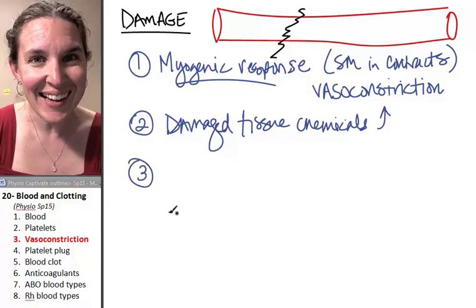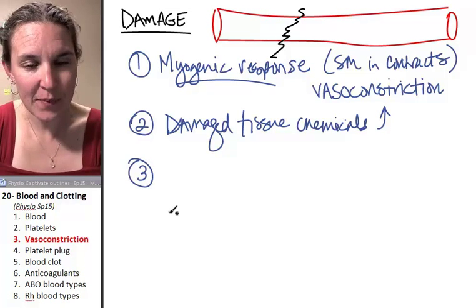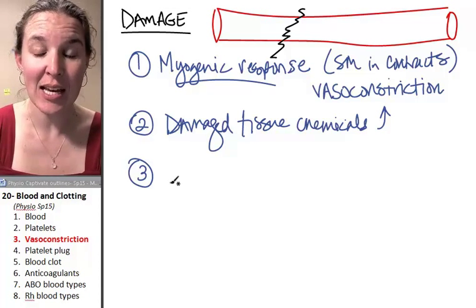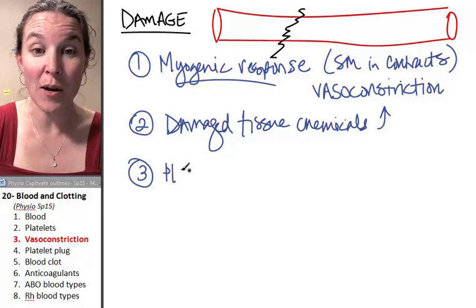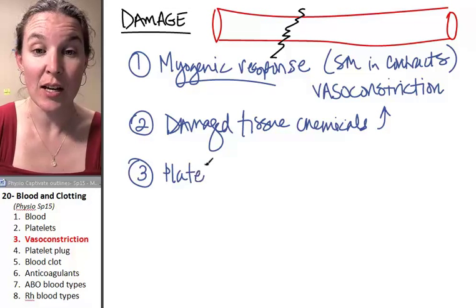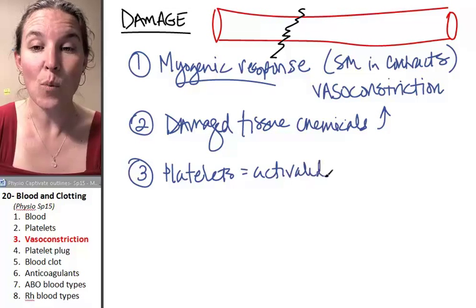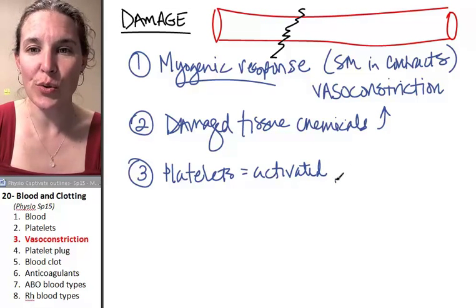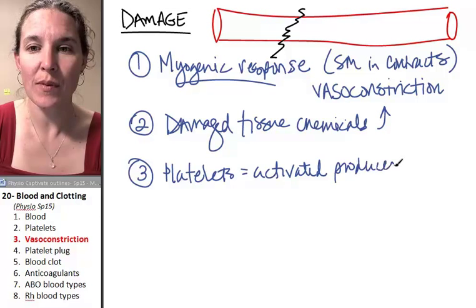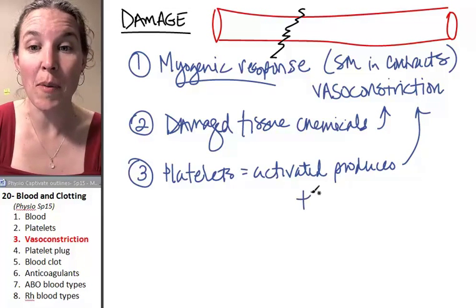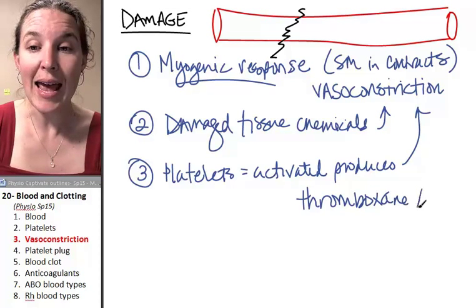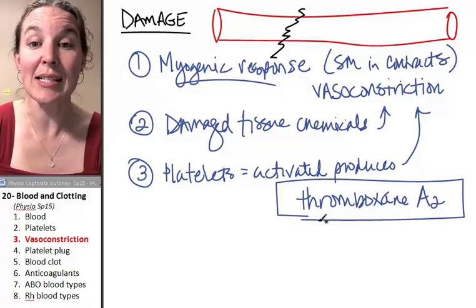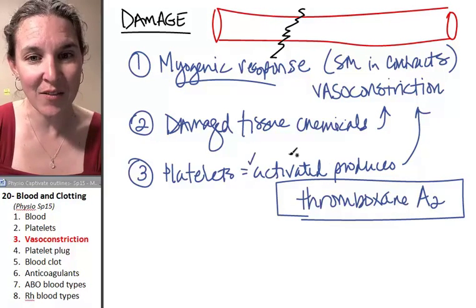And then damaged tissue has an effect on platelets. And the platelets become activated. And we're going to talk about this in the next section. In addition, platelets get activated. And when they get activated, they produce another vasoconstrictor called thromboxane A2. Thromboxane A2 is a vasoconstrictor produced by activated platelets.